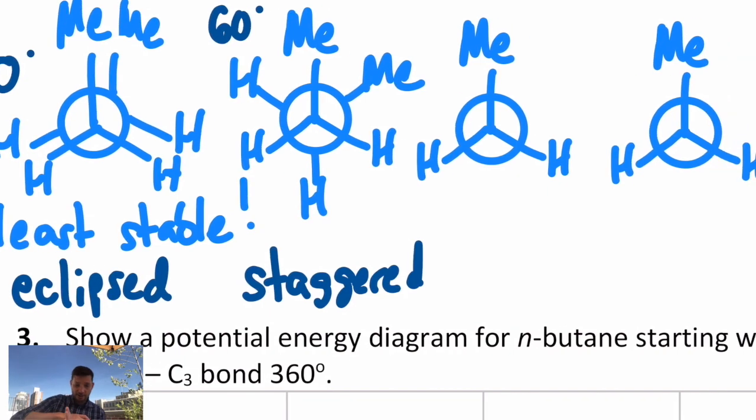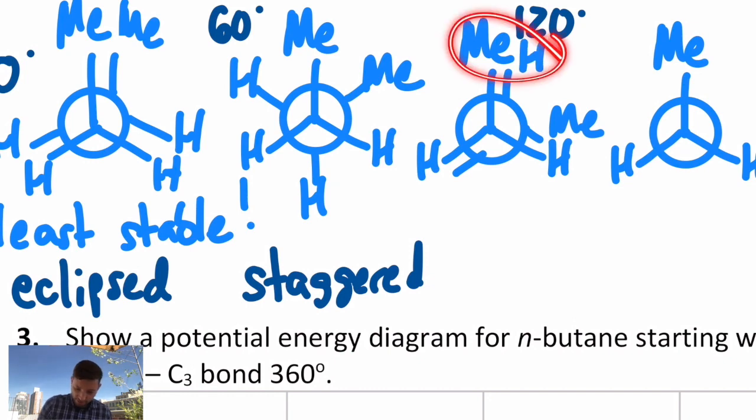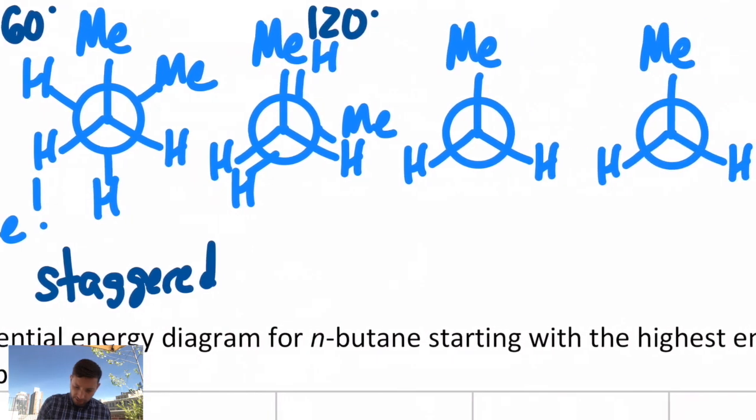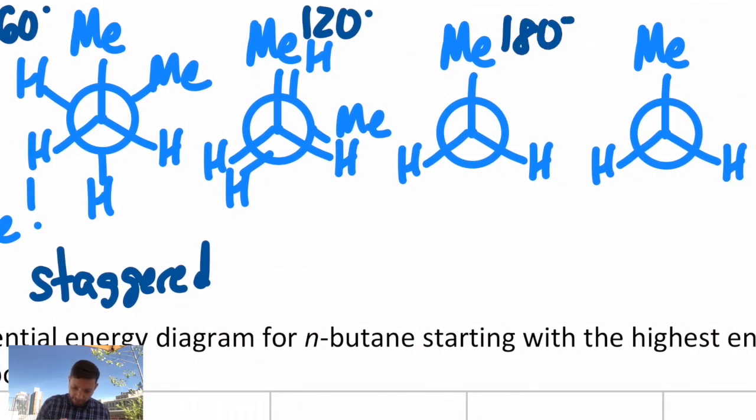Let's keep going. Let's rotate it again. Now we're at 120 degrees. We're actually back to a different eclipsed conformer, but this time the methyls aren't occupying the same space. There's a methyl hydrogen eclipsing each other, and then there's another different methyl hydrogen eclipsing each other right there, and then there's a hydrogen hydrogen eclipsing interaction. If we keep going, we get to 180. We're back to a different staggered conformation. Now the methyl is at the very bottom. The other two spots are Hs.